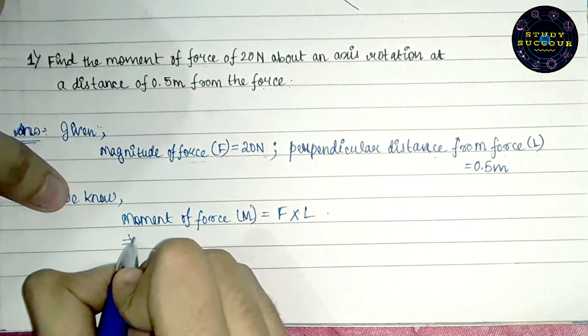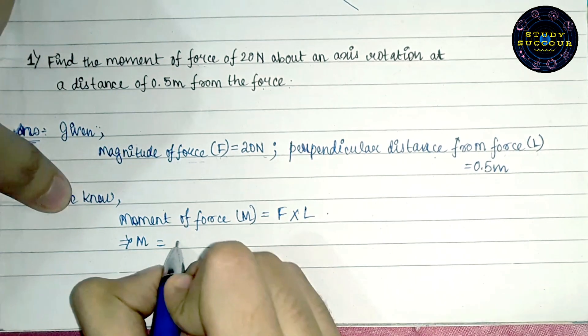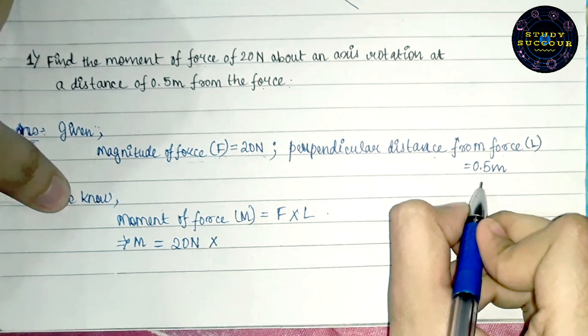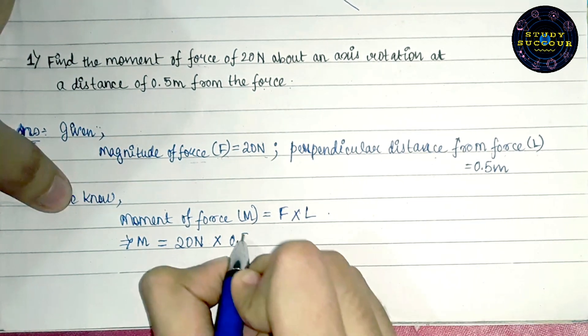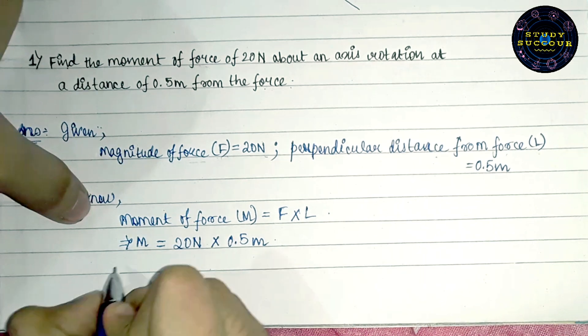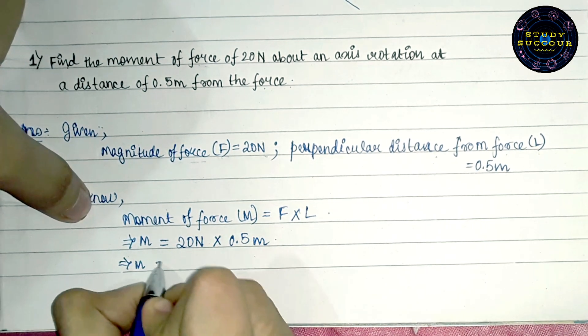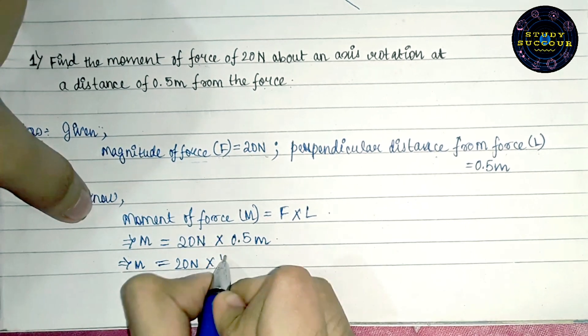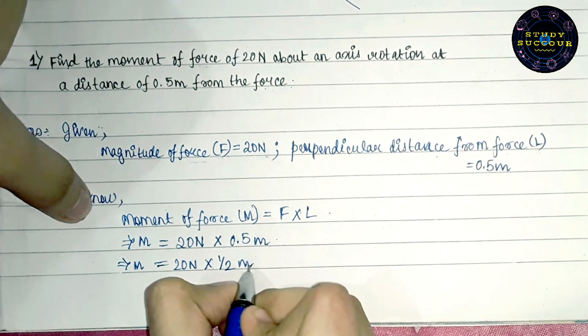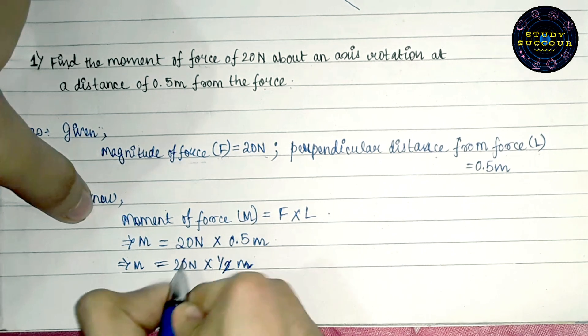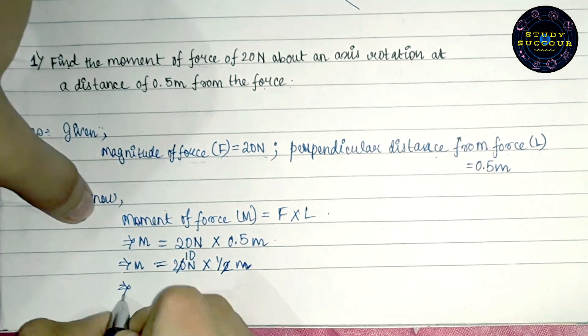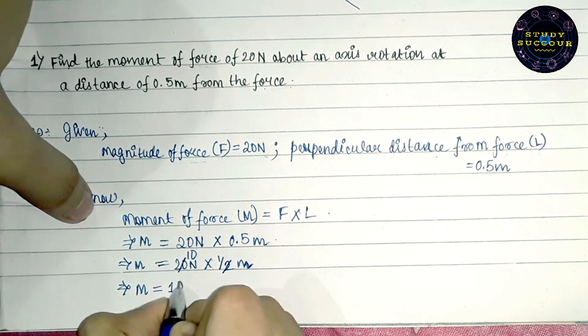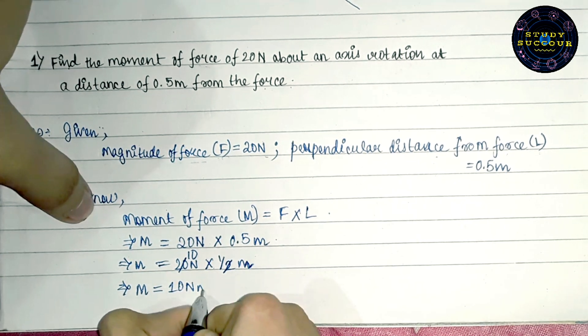So, here we get moment of force as 20 Newton into 0.5 meters. We can write 0.5 meters as half. So, this will be 20 Newton into half meters. This is 10 and so, our final answer is moment of force here is 10 Newton meter.